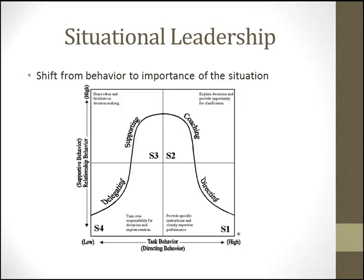The situational leadership model contrasts supporting and directing behaviors. Supportive behaviors consist of the extent to which a leader engages in two-way communication — listening, providing support and encouragement, facilitating interaction, and involving followers in decision-making. Hersey and Blanchard believed this was important at some stages. They also felt it was appropriate to utilize directive behaviors, which are characterized by one-way communication — the leader spells out the follower's role, tells them what to do, where, how, and closely supervises performance. Though not ideal in all situations, it was certainly ideal in specific ones.